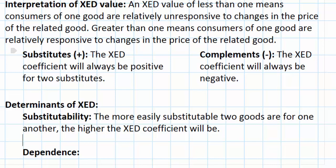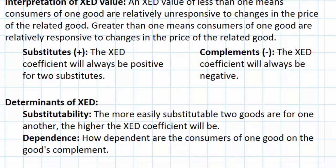The more easily substitutable two goods are, the higher the XED coefficient should be. For complementary goods, how strongly consumers of one good depend on the related good will determine how high the XED coefficient will be. For example, hamburgers and french fries are usually consumed together, so an increase in the price of hamburgers should lead to a decrease in the demand for french fries. However, hamburger buns are even more complementary — very few people would ever eat a hamburger without a bun. Therefore, the XED coefficient for hamburgers and hamburger buns would likely be much larger than for hamburgers and french fries, since people will not buy buns when hamburger prices rise, but french fries can still be eaten on their own or with other dishes.